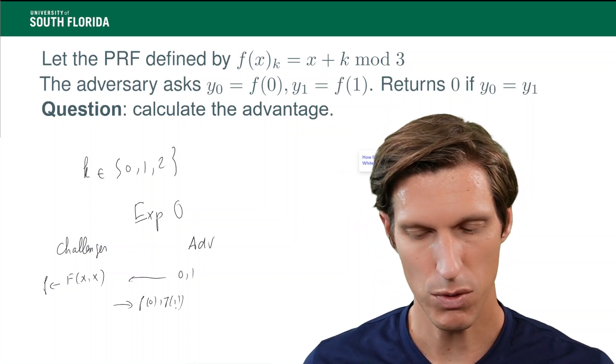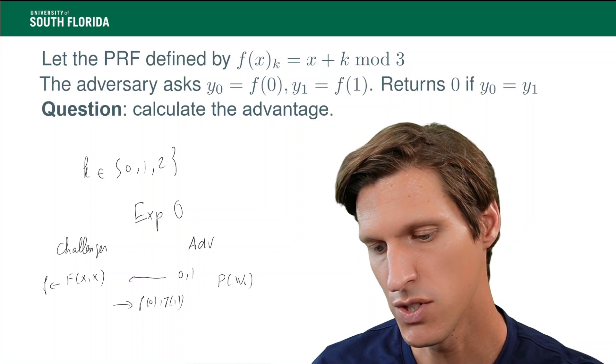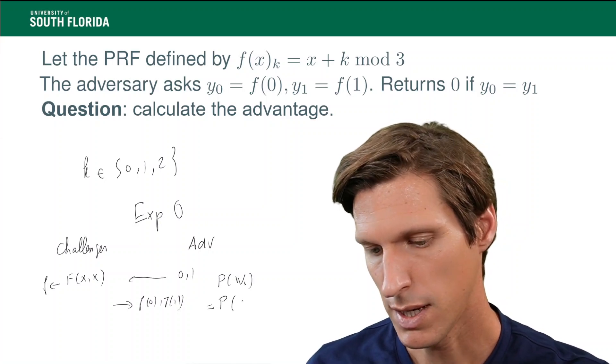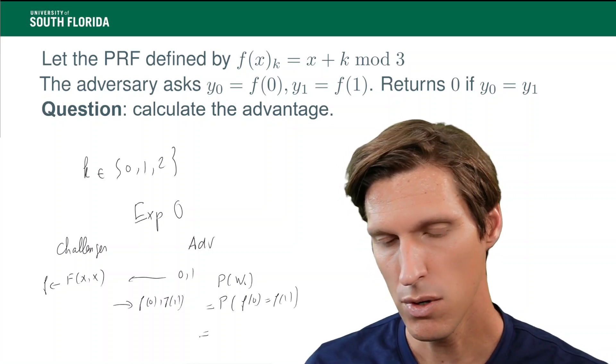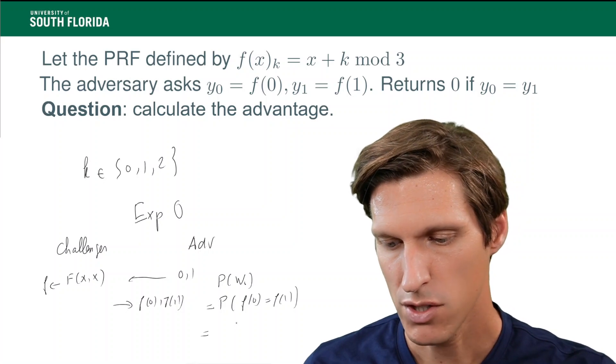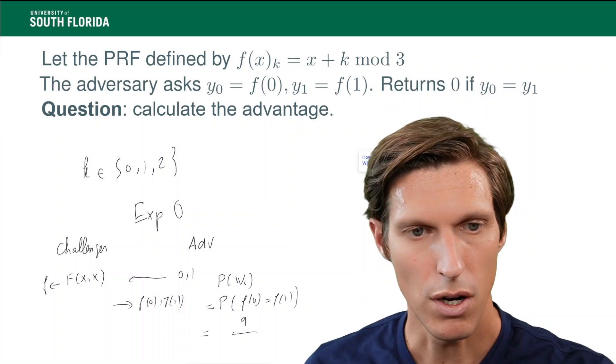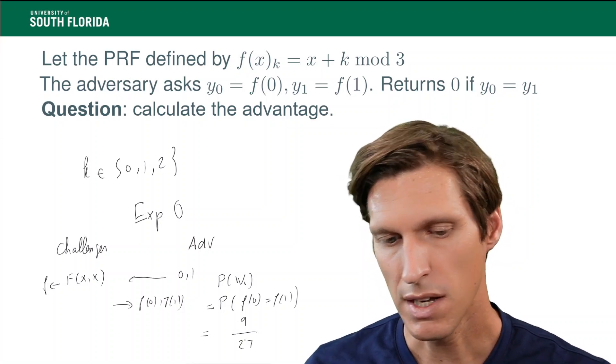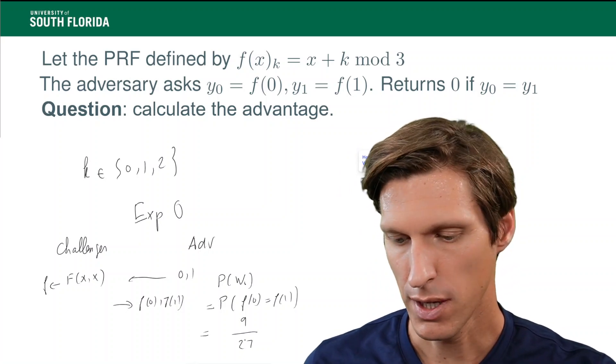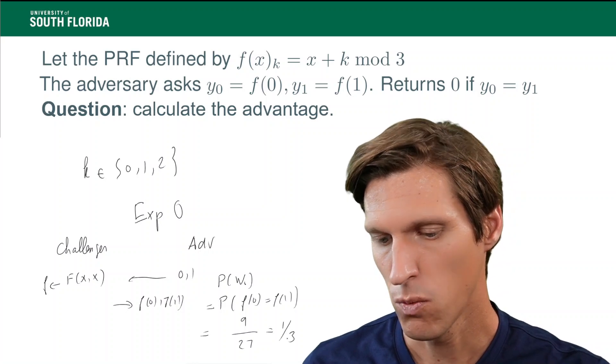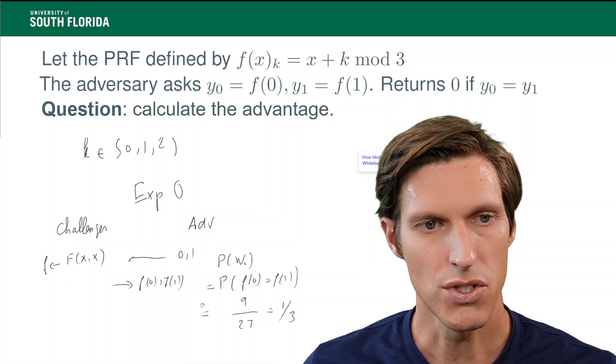Now, what is the probability here that f of 0 equals f of 1? So, probability of w0. That's the probability that f of 0 equals f of 1. So, that's the number of functions f such that f of 0 equals f of 1, which we calculated to be 9, divided by the total number of functions. And that we said was 27. So, see, this is all about counting. And once we've counted, so 9 divided by 27, that is just 1 out of 3. So, here goes the calculation of p of w0.